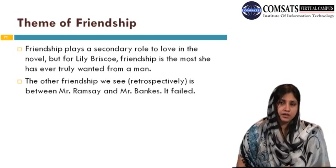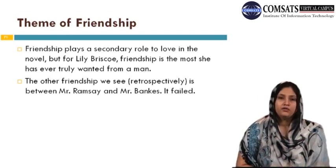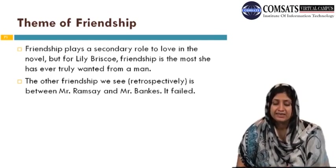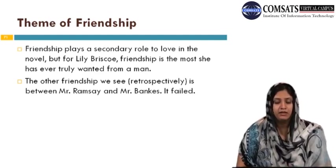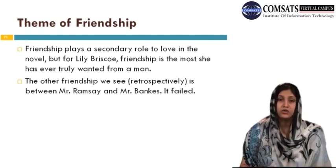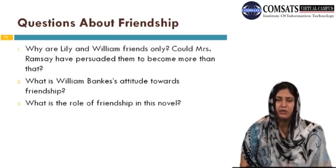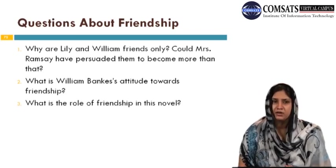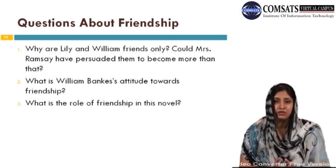The theme of friendship: after love, the most cherished theme is friendship. Friendship plays a secondary role to love in the novel, but for Lily Briscoe, friendship is the most she has ever truly wanted from the opposite sex. The other friendship we see retrospectively is between Mr. Ramsey and Mr. Banks, though it failed. Questions include: Why are Lily and William friends only — why couldn't they marry? Could Mrs. Ramsey have persuaded them to become more, or was there a subtle hesitation on the part of these characters that kept them apart and yet so close?